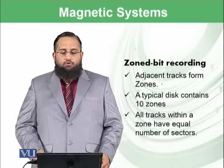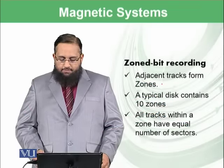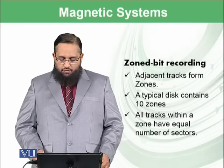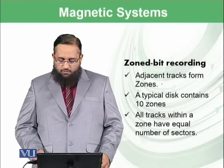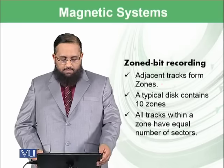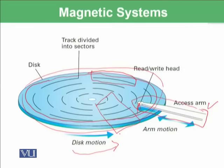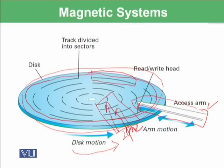There is a concept called zone bit recording, where adjacent tracks form zones. A typical disk contains 10 zones, and all tracks within a zone have an equal number of sectors. Adjacent sectors together form a zone, and the read-write head moving in that direction can read data from the adjacent sectors, which reduces the time to read and write the data.